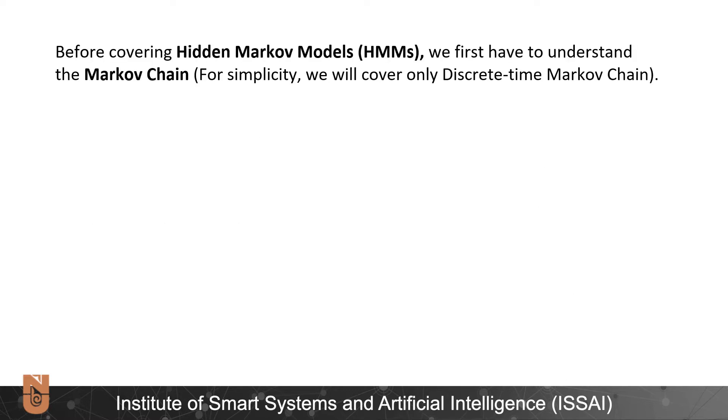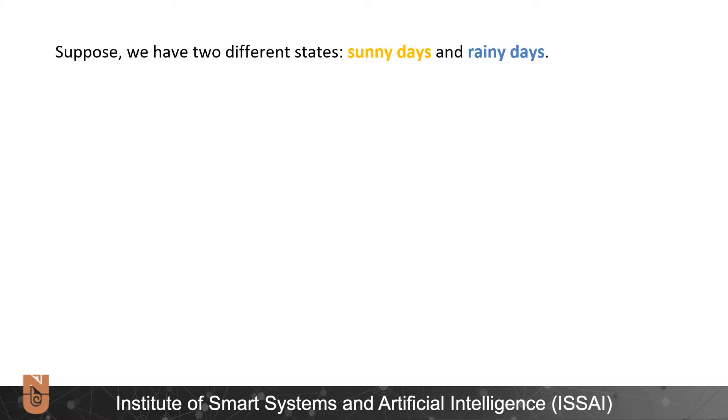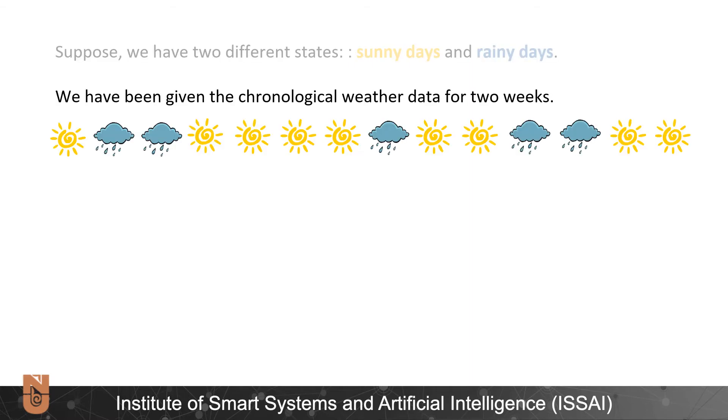Before covering HMM we first have to understand the Markov chain and for simplicity in this video we'll cover only discrete time Markov chain. As an example let's consider a weather forecast. Suppose we have two different states: sunny days and rainy days. We have been given the chronological data for two weeks: sunny, rainy, rainy, four times sunny, rainy, twice sunny, twice rainy, and twice sunny days.